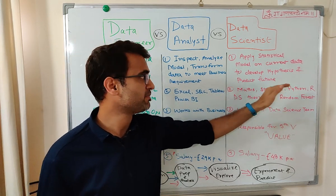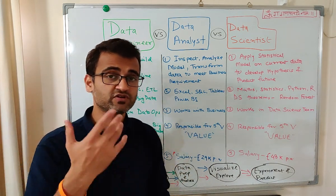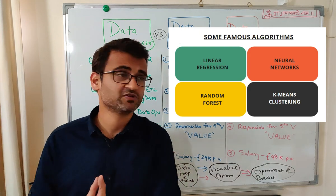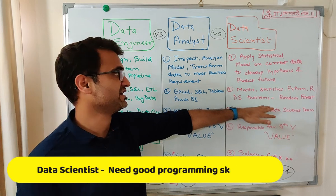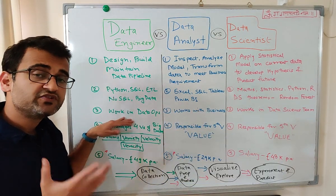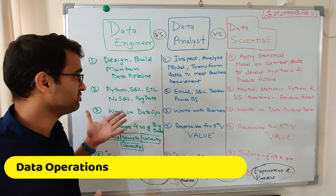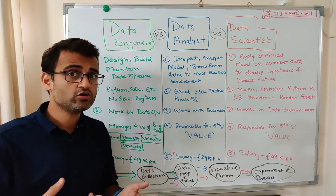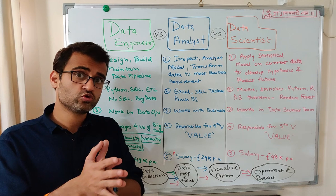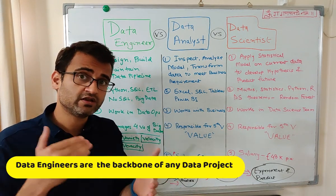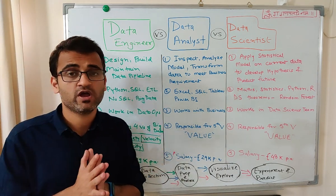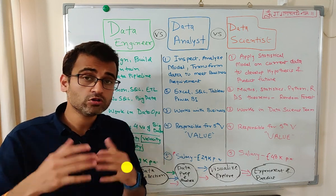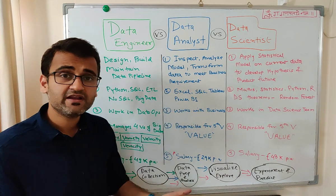Data scientists need to know different theorems and algorithms — for example, neural networks require a different set of theorems. Data engineers generally work in teams called DataOps — data operations teams — who do the 'dirty job,' ensuring the data pipeline is intact and data is coming in the right manner, right quality, and compliant with regulations like GDPR.